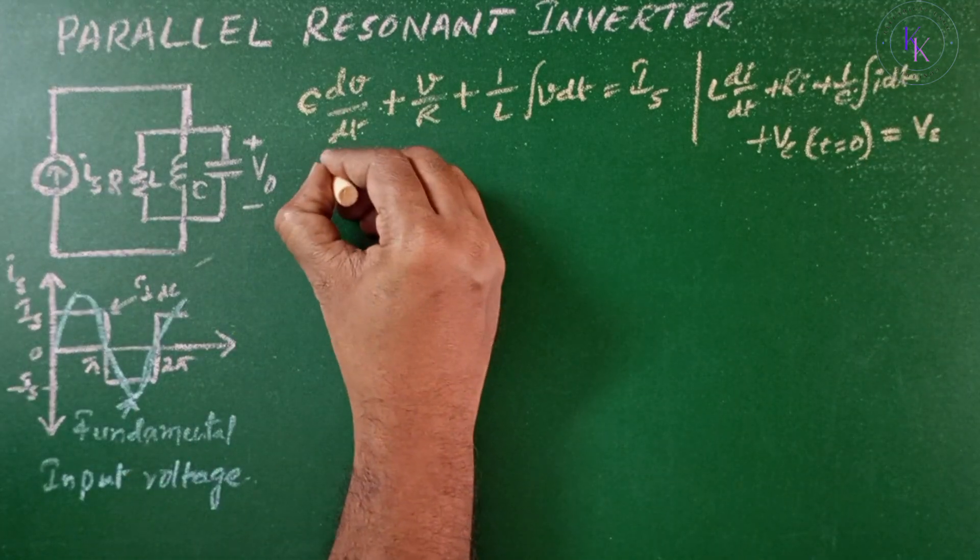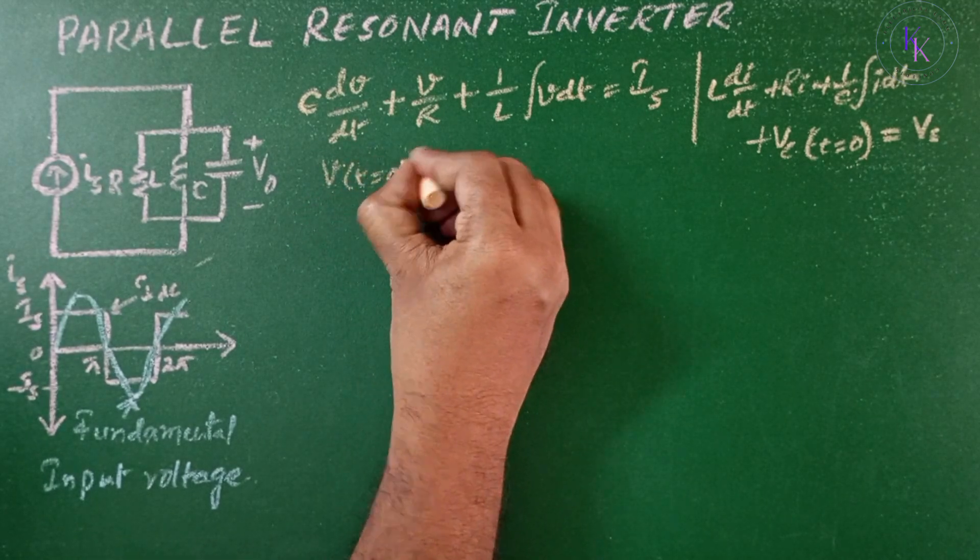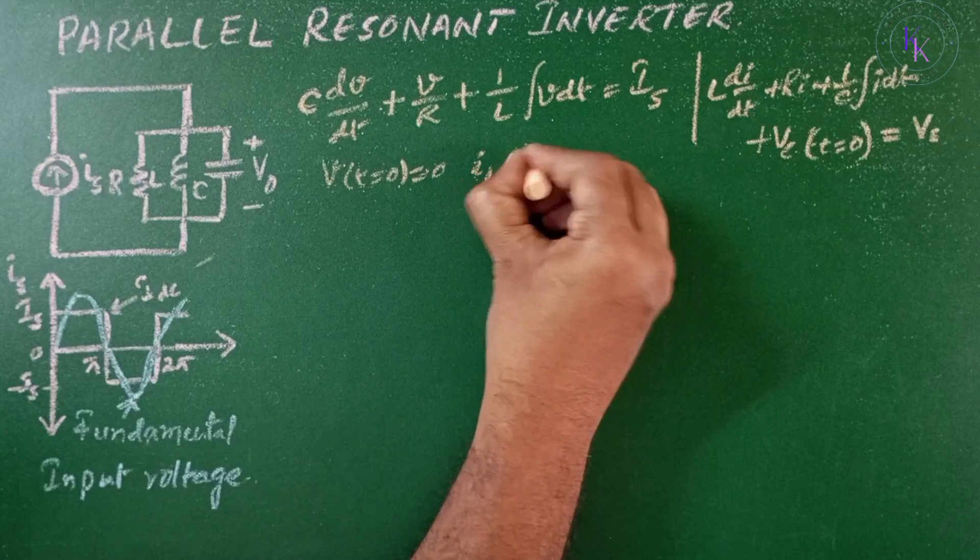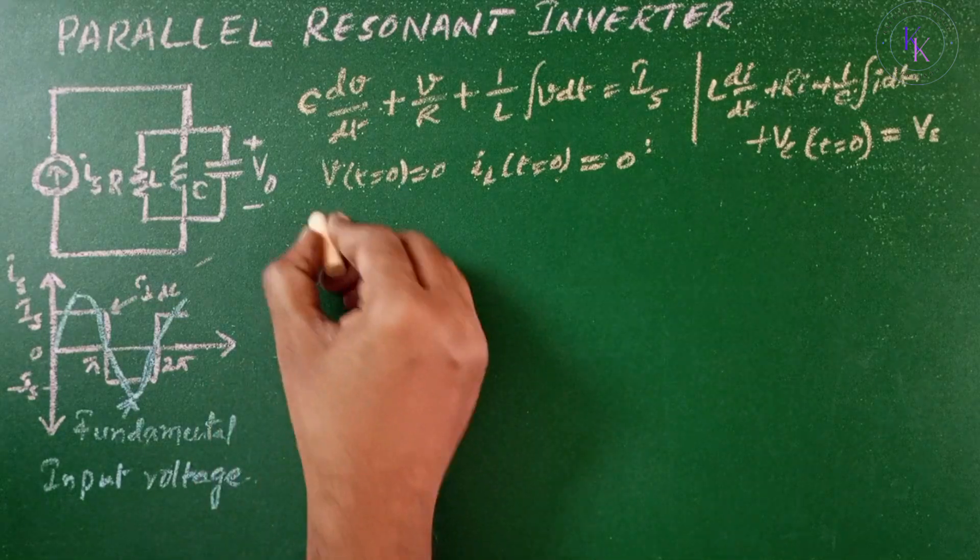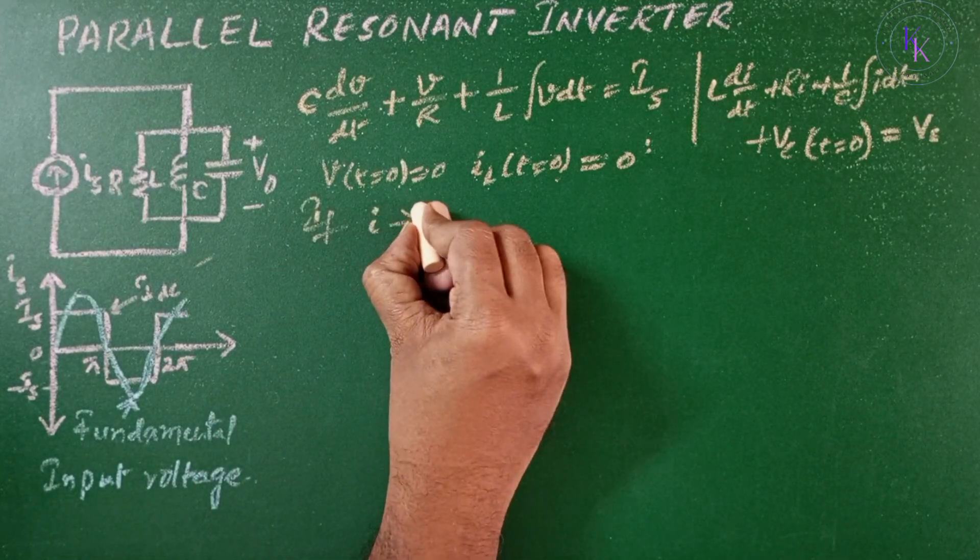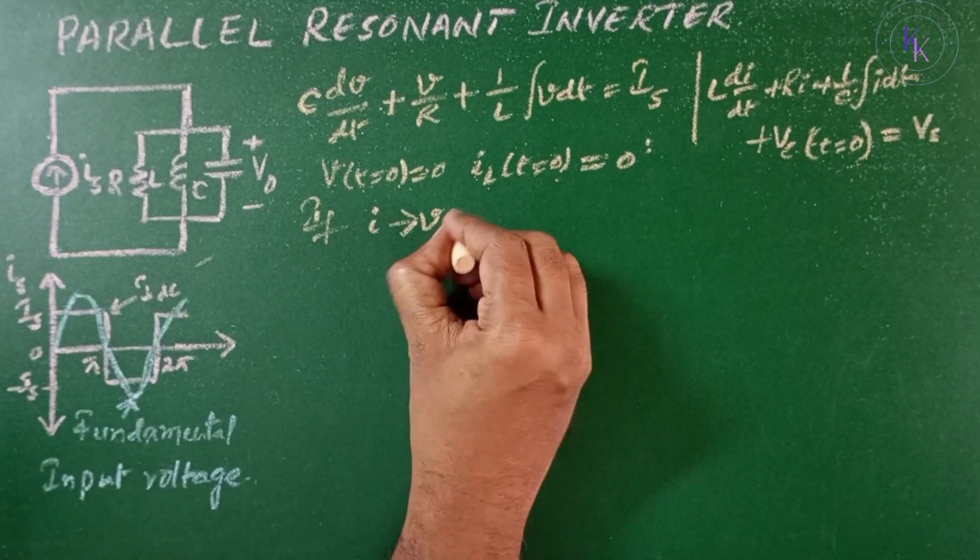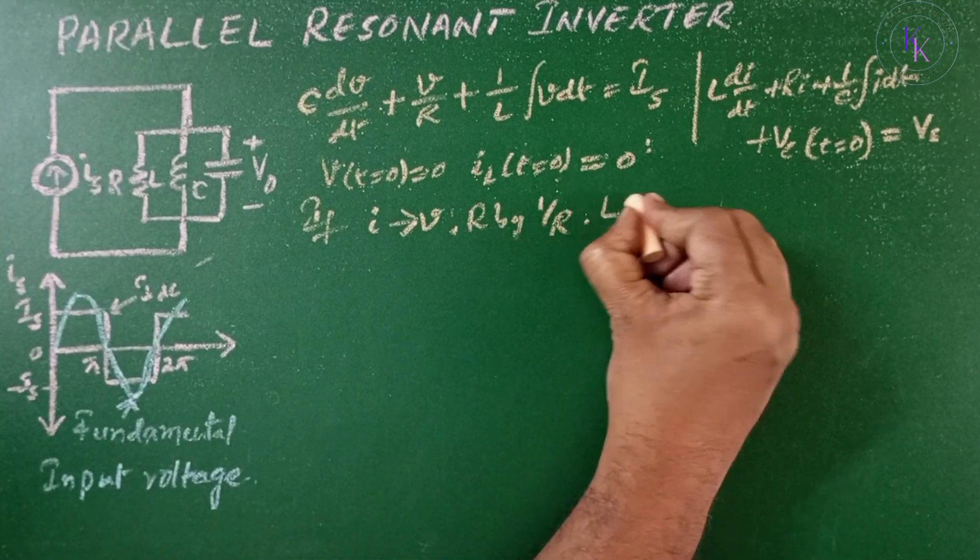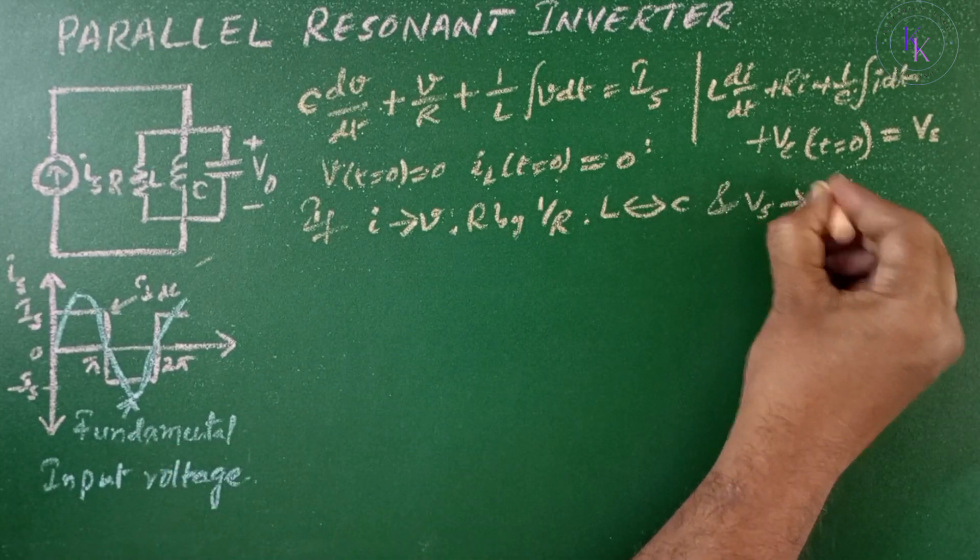This has the initial conditions that V at t=0 equals 0 and IL at t=0 is approximately 0. Now if I is replaced by V, R by 1/R, L with C, C with L, and Vs with Is.